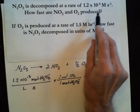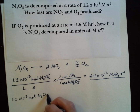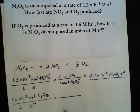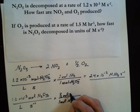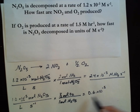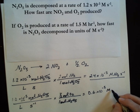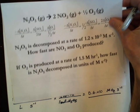For oxygen, we start with 1.2 × 10⁻³ mole of N₂O₅ per liter per second and multiply by the reaction stoichiometry: 1 mole of N₂O₅ corresponds to one-half mole of O₂. One-half times 1.2 is 0.6, so we get 0.6 × 10⁻³ molar O₂ per second. The moles of N₂O₅ cancel, leaving mole per liter of oxygen per second.